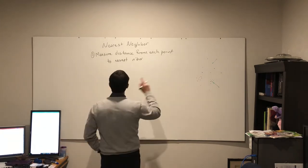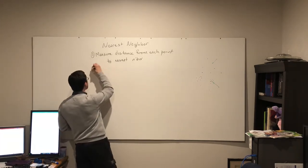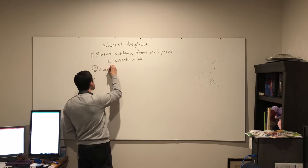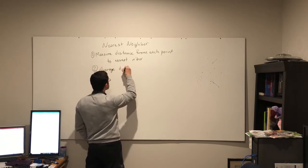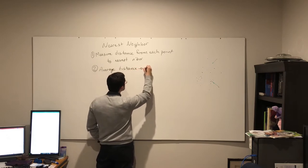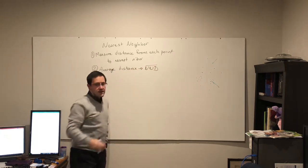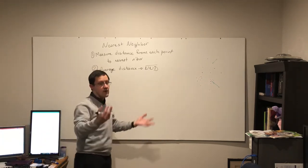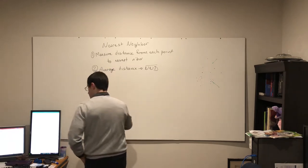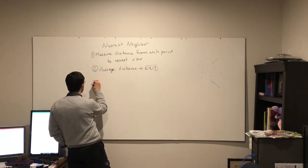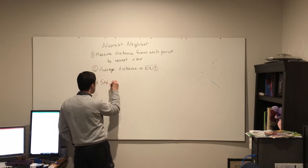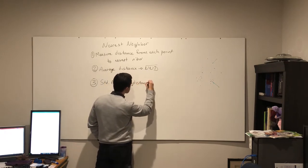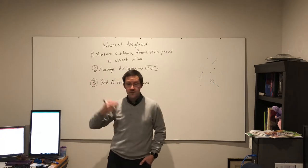And we find the average of these distances. That is notated NND with a bar over it, to say the average of the nearest neighbor distance.